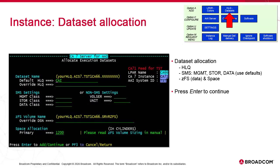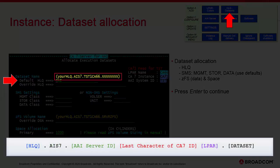In the next screen we allocate the instance datasets. They require an HLQ. The default option lets you enter a high-level HLQ and the software appends the rest. The override HLQ option allows us to use a non-standard format HLQ. The reason we emphasize the importance of the CA7 and AAI instance IDs is this: when the instance datasets are created in ZOS, the default naming convention of the HLQ uses the following — first a fixed value AIS7 dot, then the AAI instance ID, then the last character of the CA7 instance ID, the LPAR dot, and finally the dataset name. The AAI server ID name and CA7 instance ID are the data points we entered in the previous screen.